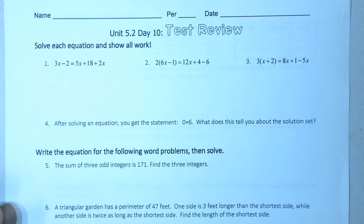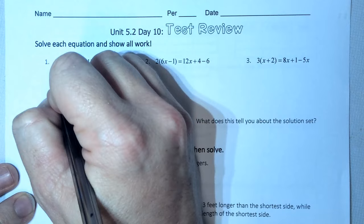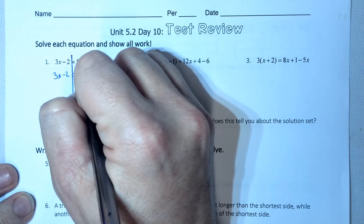We know that we're solving for x because that's my only letter. So I need to simplify both sides. This side's already simplified, this side's not. So I'm going to combine like terms. 5x plus 2x is 7x. Because they're on the same side, I keep the same sign.